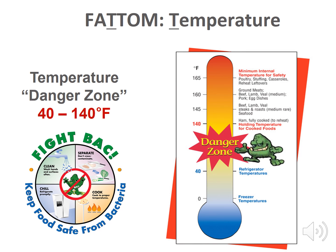The first T is for temperature. Bacteria grows in the temperature range of 40 to 140 degrees Fahrenheit. This is called the temperature danger zone. Move food through this temperature danger zone as quickly as possible during the preservation process to keep the bacteria from growing.